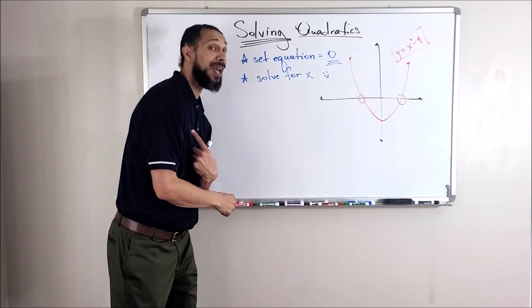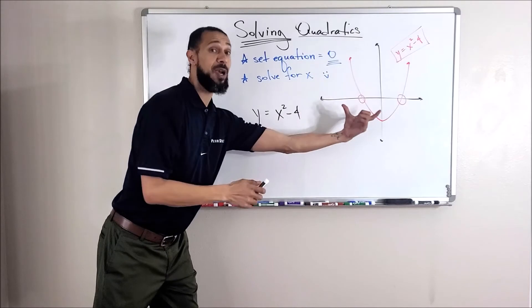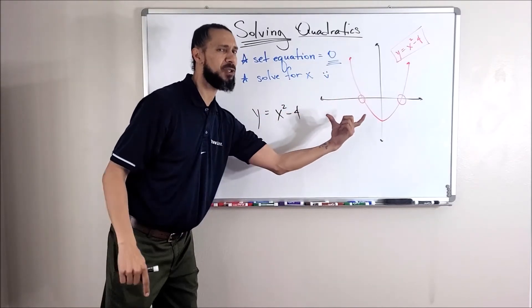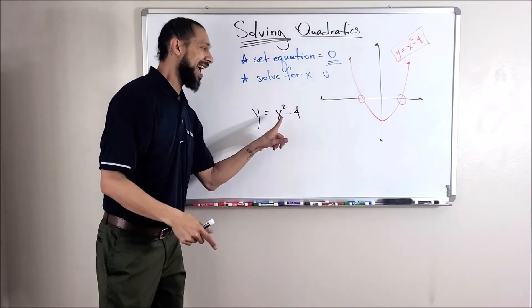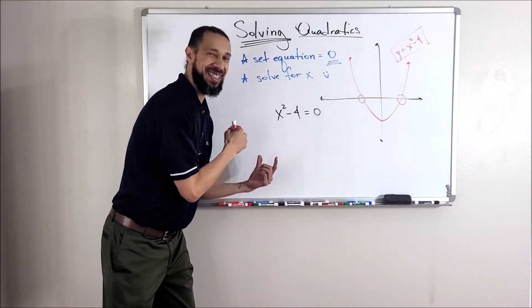So here's the equation I'm trying to solve. The equation in my graph, I'm trying to figure out where it crosses the x-axis. Notice it's twice, we'll get to that later. What do I do? Set this equal to zero. Just like that.